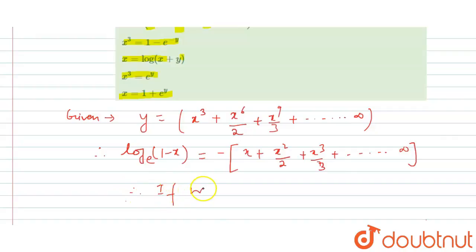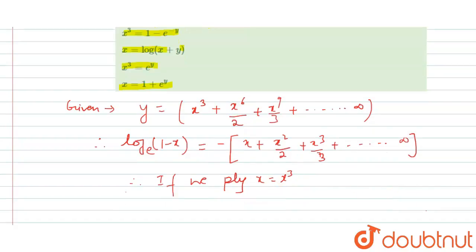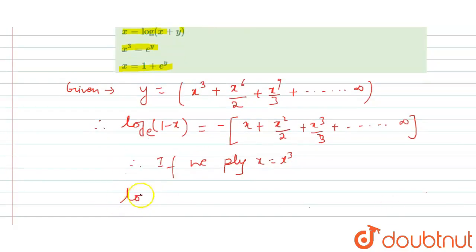If we plug x equals x cubed in the above expression of log, what we will get? We will get log to the base e of 1 minus x cubed, and here we get x cubed, x to the power 6 by 2, x to the power 9 by 3, and so on up to infinite terms.